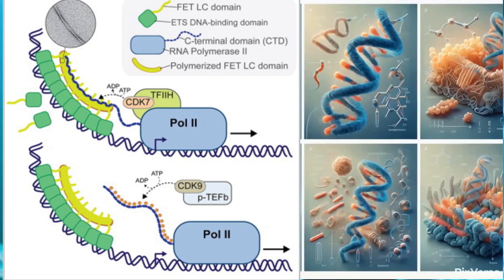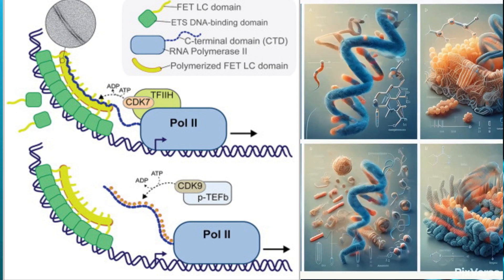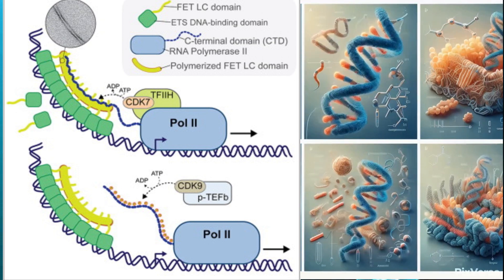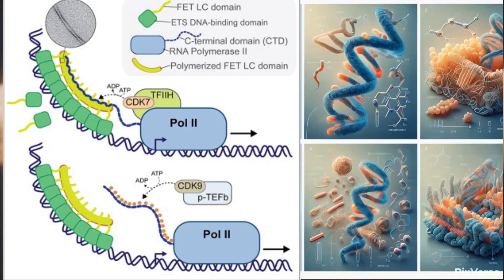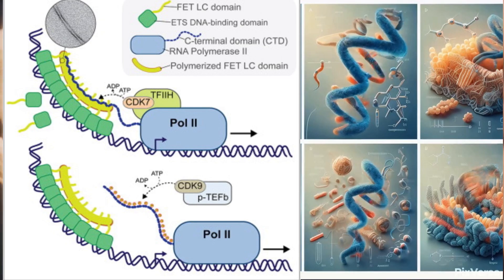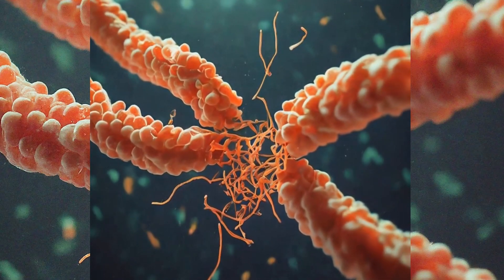POL2, along with other enzymes, assembles at a DNA sequence near a gene, marking the beginning of transcription. For the longest time, scientists believed that during cell division, or mitosis,